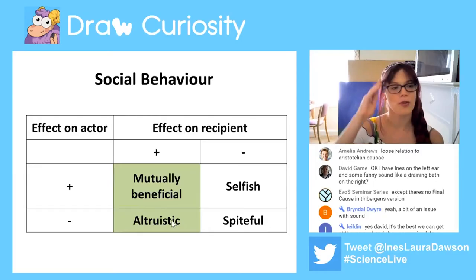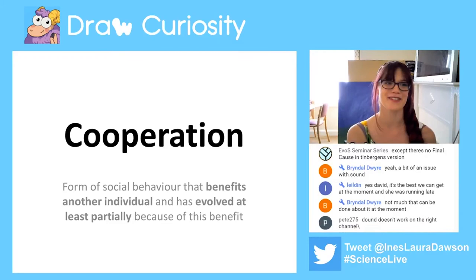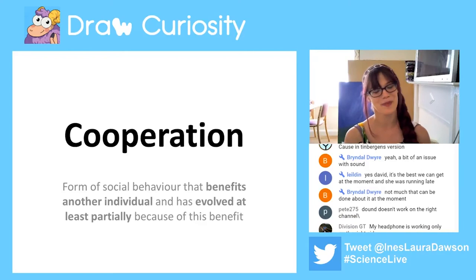So what is eusociality? Eusociality is the most ultimate cooperative altruistic behavior that animals can display during their lifetime. Altruism is basically when an actor performs a behavior that benefits the recipient but they actually incur a cost too. Cooperation is just a form of social behavior — it benefits another individual, and it's evolved at least partially because of this benefit. And the evolved bit is the important bit.